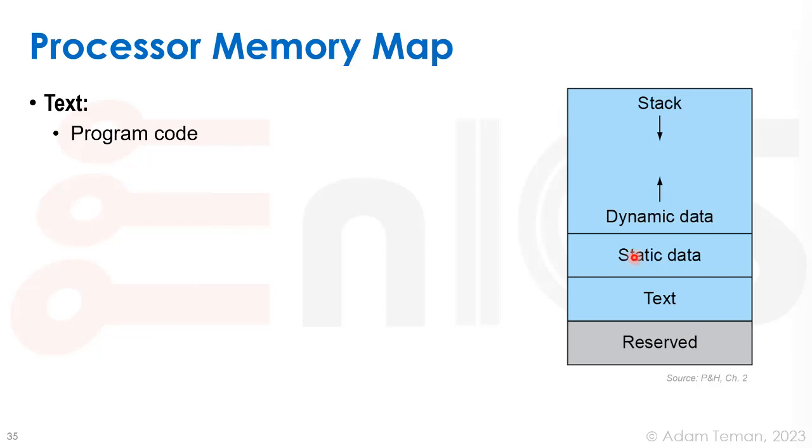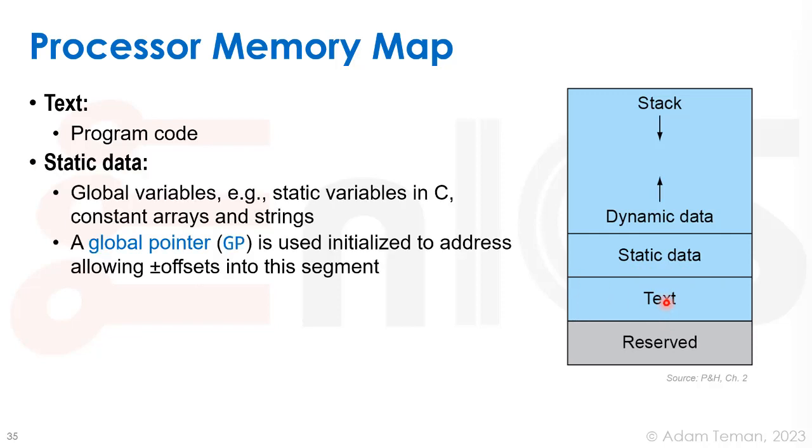The actual program code is placed in the text area. Then we have the static data area for storing global variables, static variables, and constants like strings. We can use a global pointer that points to somewhere in the memory space and use offsets from there to access these global variables or constants.